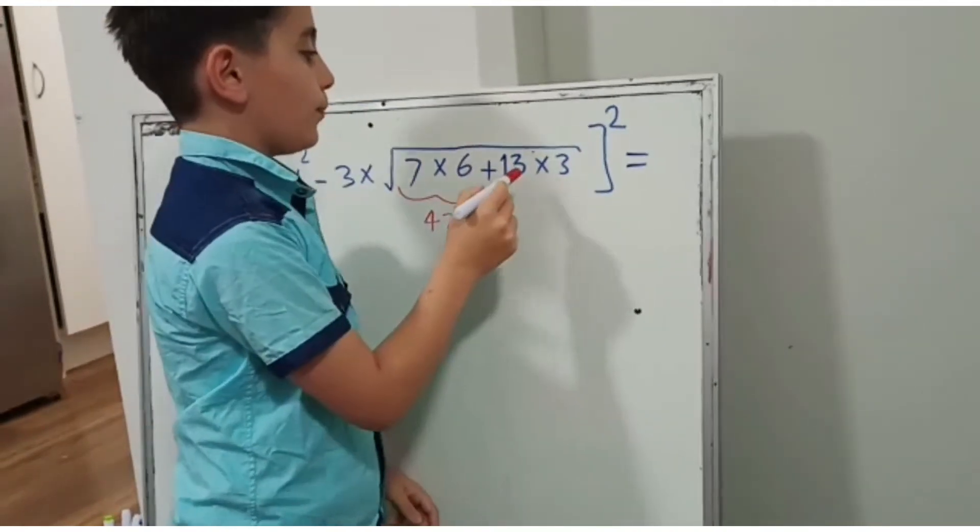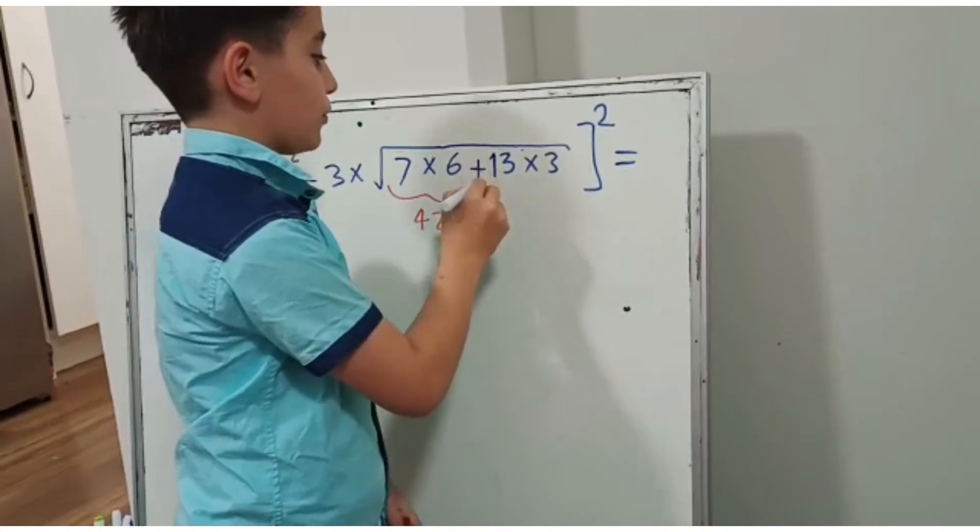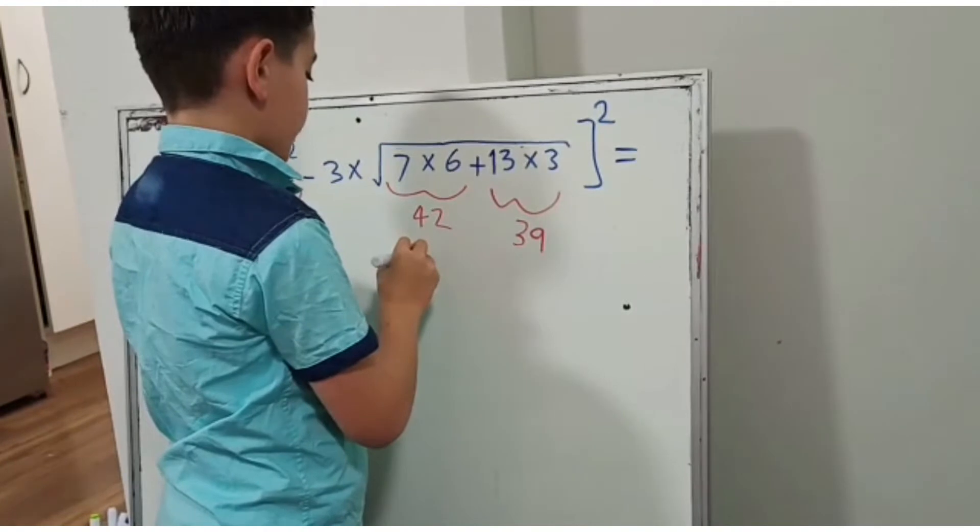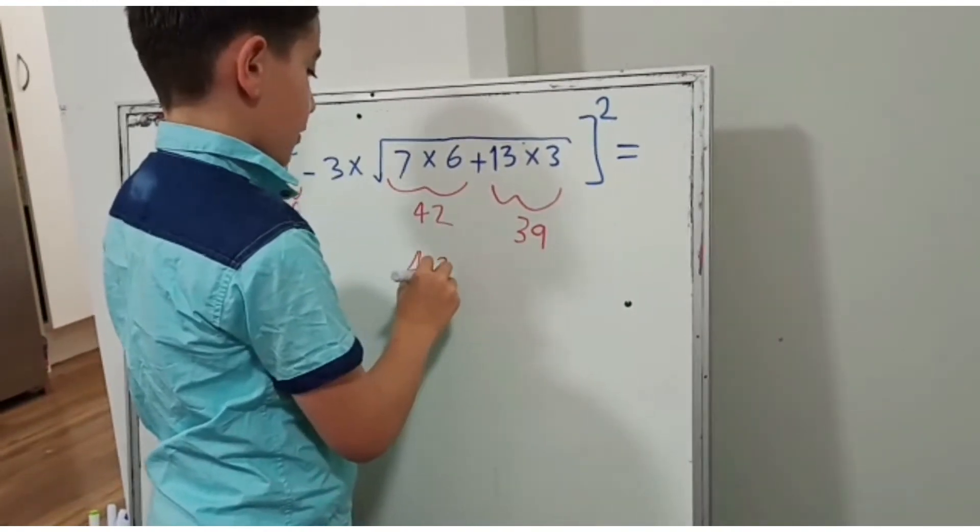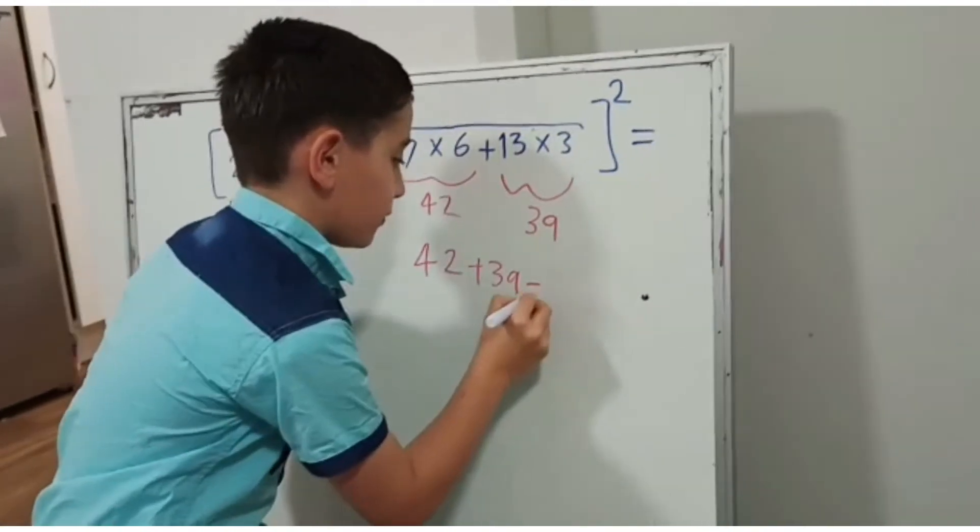42 plus 13 times 3. 13 times 3 equals 39. And 42 plus 39 equals 81.